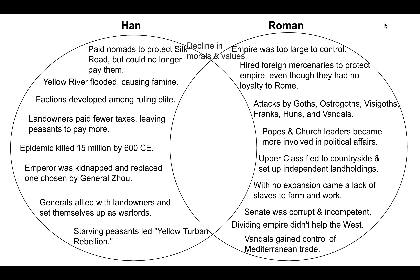Let's look at some common features — some similar reasons why these two fell. In general, there was a decline in morals and values throughout the government of both the Han Dynasty and the Roman Empire. The upper class members of both governments became very self-interested, became very lax — they were enjoying their wealth, spending all the money, drinking and fooling around and not governing. And that helped both the Han Dynasty and the western part of the Roman Empire to decline.